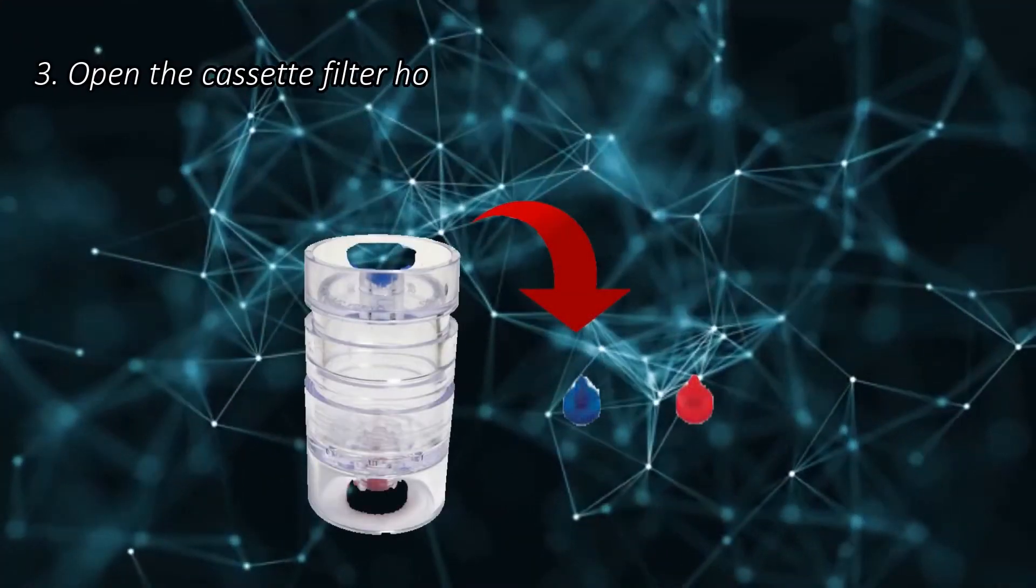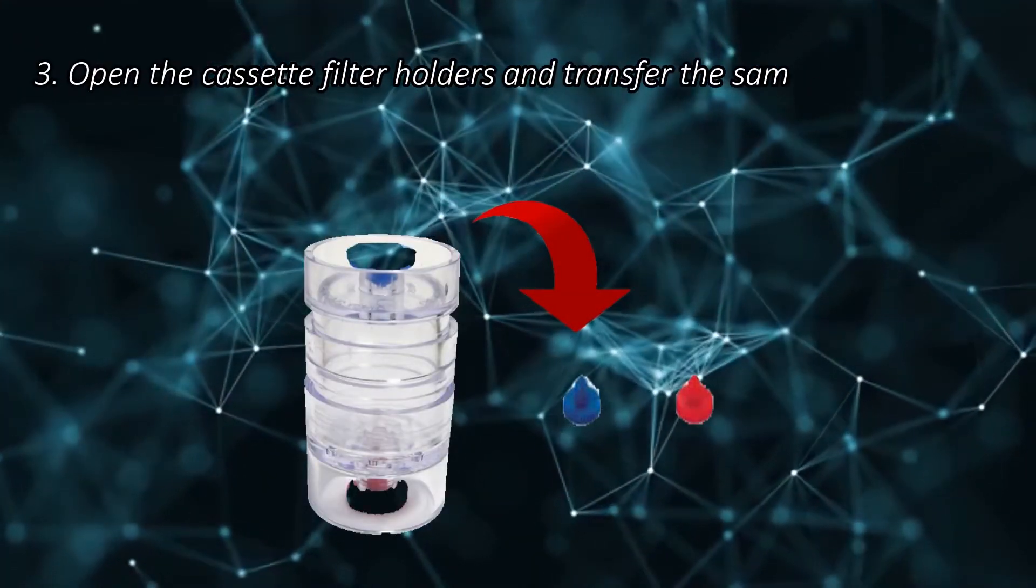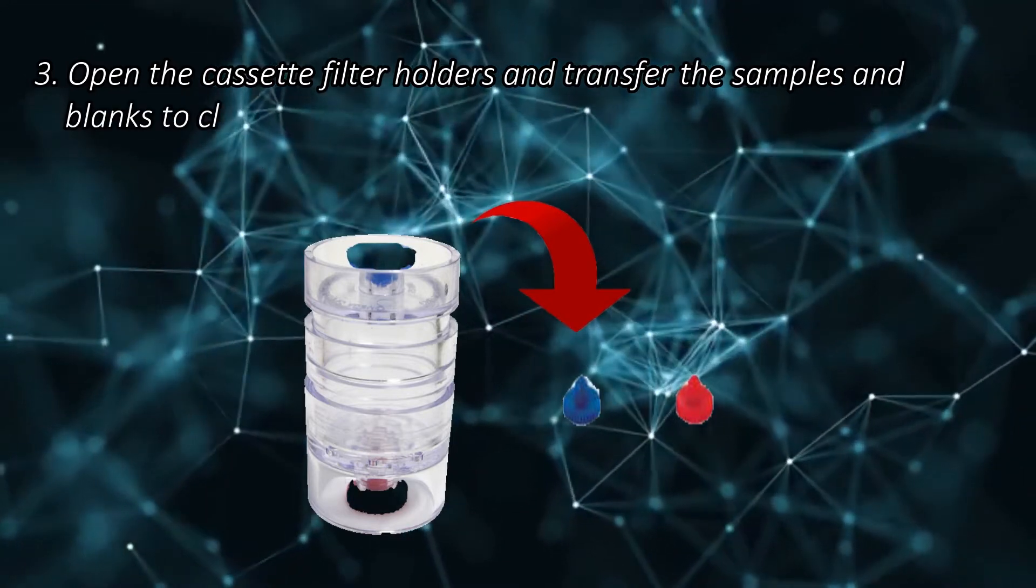Step 3. Open the cassette filter holders and transfer the samples and blanks to clean beakers.